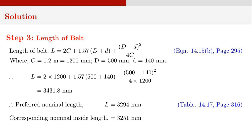In the case of V-belts, there are preferred nominal lengths available in table 14.17 on page 316. From the list, we select L as 3294 millimeters, which is the nearest value lower than 3431.8 millimeters. Corresponding to this preferred nominal length, the nominal inside length is 3251 millimeters.